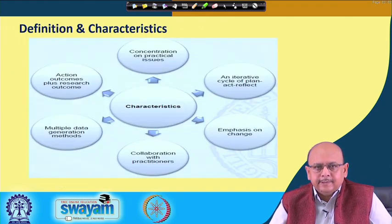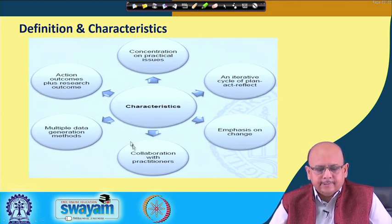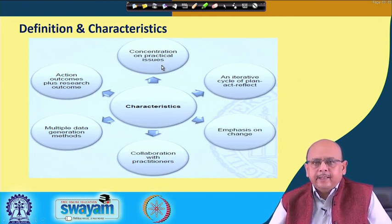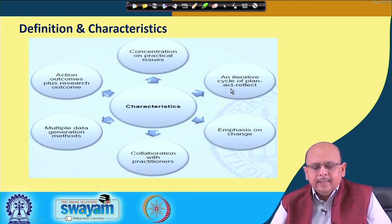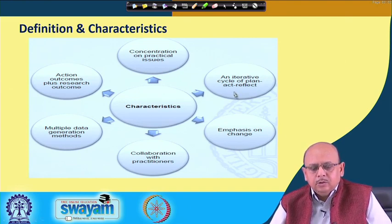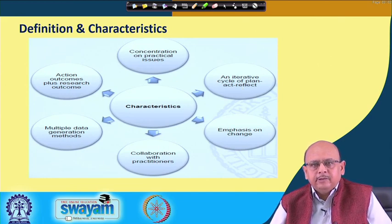Moving further, what we are going to discuss is the process and the various characteristics. Here you focus more on practical issues — what you are really interested in is experimentation or observation. Then at the next stage, it is an iterative cycle. It is a cyclical process where you are going to plan, act, and then reflect. It means that you plan the activities you want to go about in terms of change, you act on that and then see what happens, whether you are able to establish the cause-effect relationship or not.